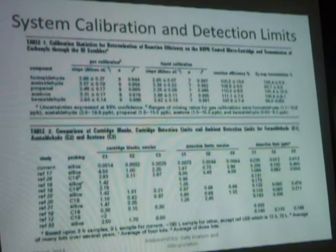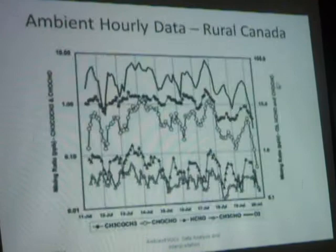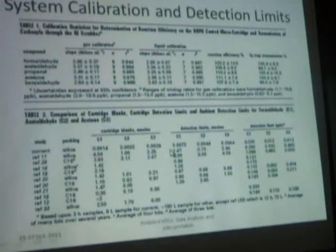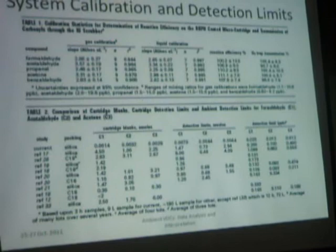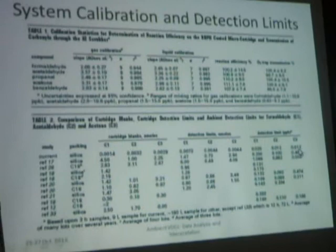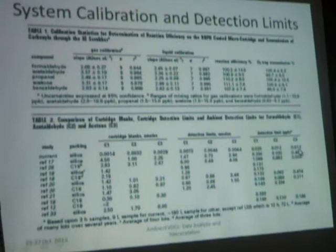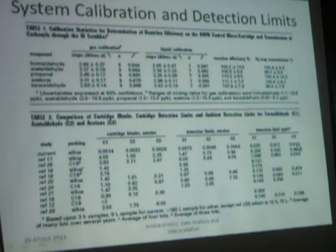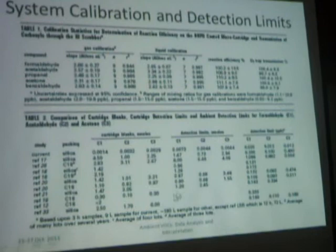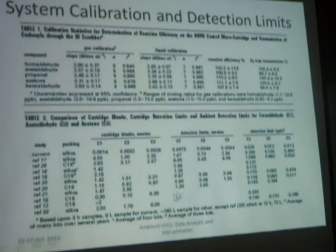With an ozone trap in place, the effect of ozone on collection has been investigated as well. Because the system is continuously coating and analyzing the cartridge, blank levels are quite low and detection limits are quite low. Sensitivity for C1, C2, and C3 compounds is in the range of 12 to 20 parts per trillion. For sub-parts-per-billion levels, it is a very sensitive technique. The sample volumes are fairly low as well.